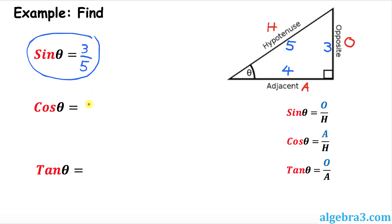How about cosine theta? Which is adjacent over hypotenuse, that's going to be 4 over 5. That's all you have to do. And finally, tangent is opposite over adjacent, that means 3 over 4.